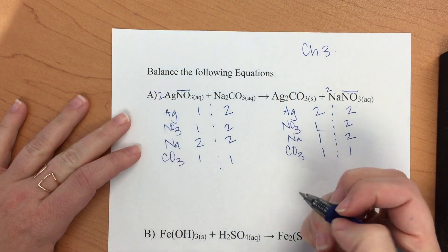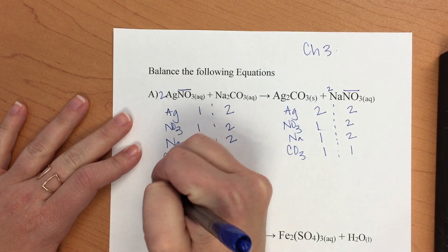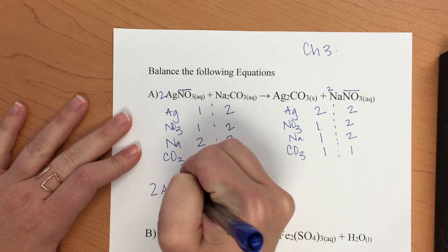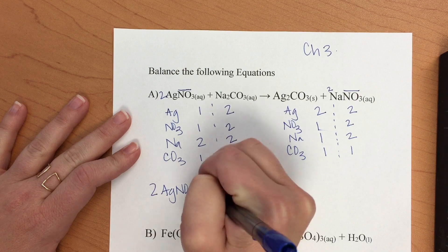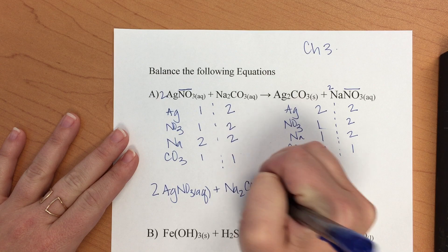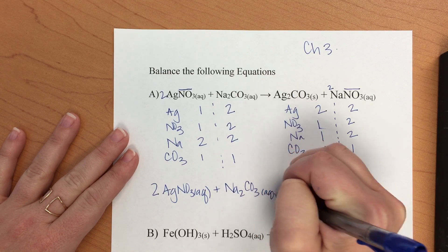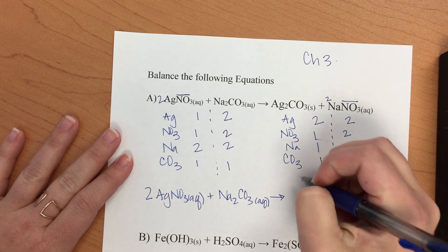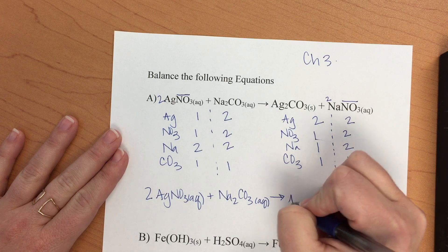The last thing we need to do is rewrite our balanced chemical equation with 2 AgNO3 aqueous plus Na2CO3 also aqueous gives Ag2CO3 solid plus 2 NaNO3 aqueous. Note that all of the states and coefficients are included.